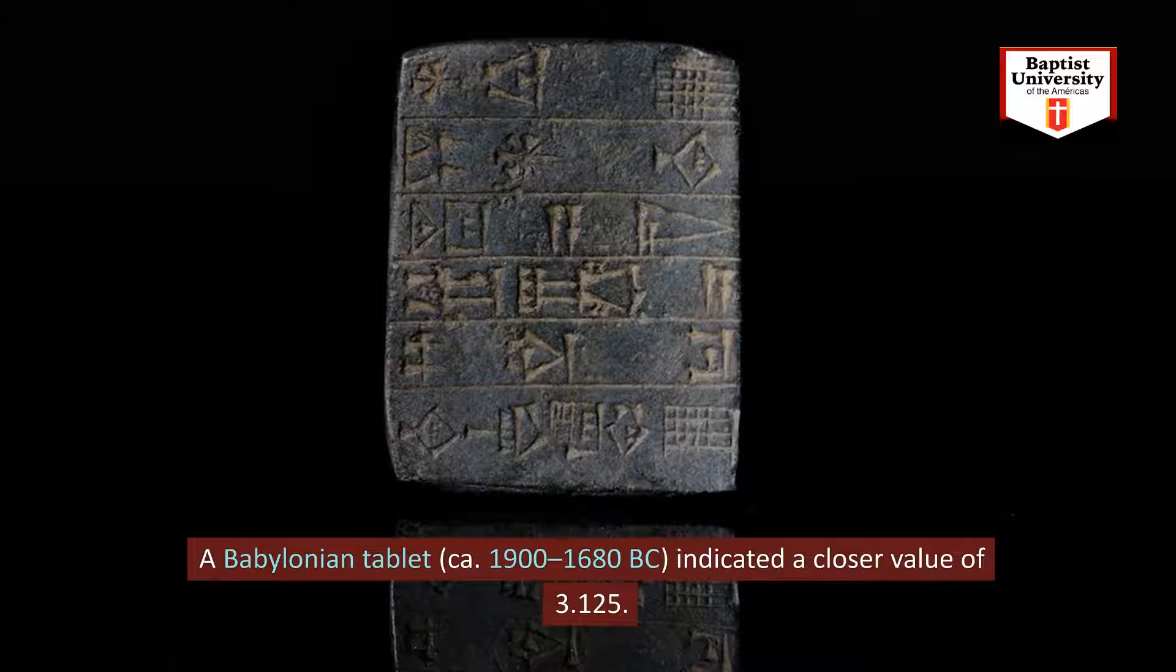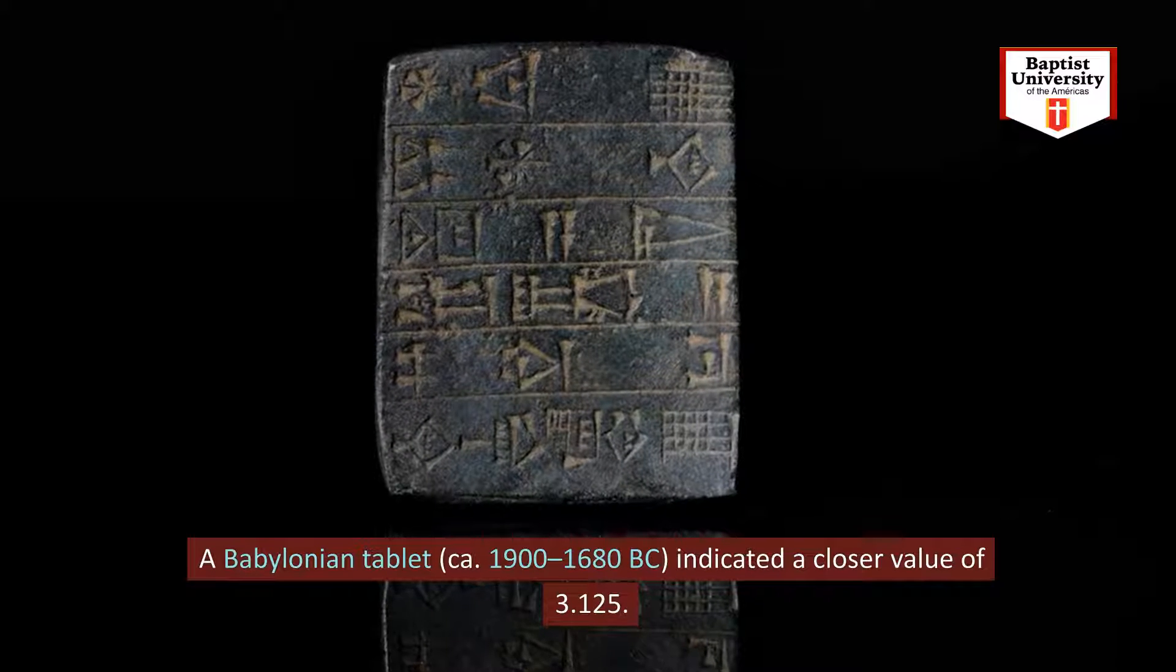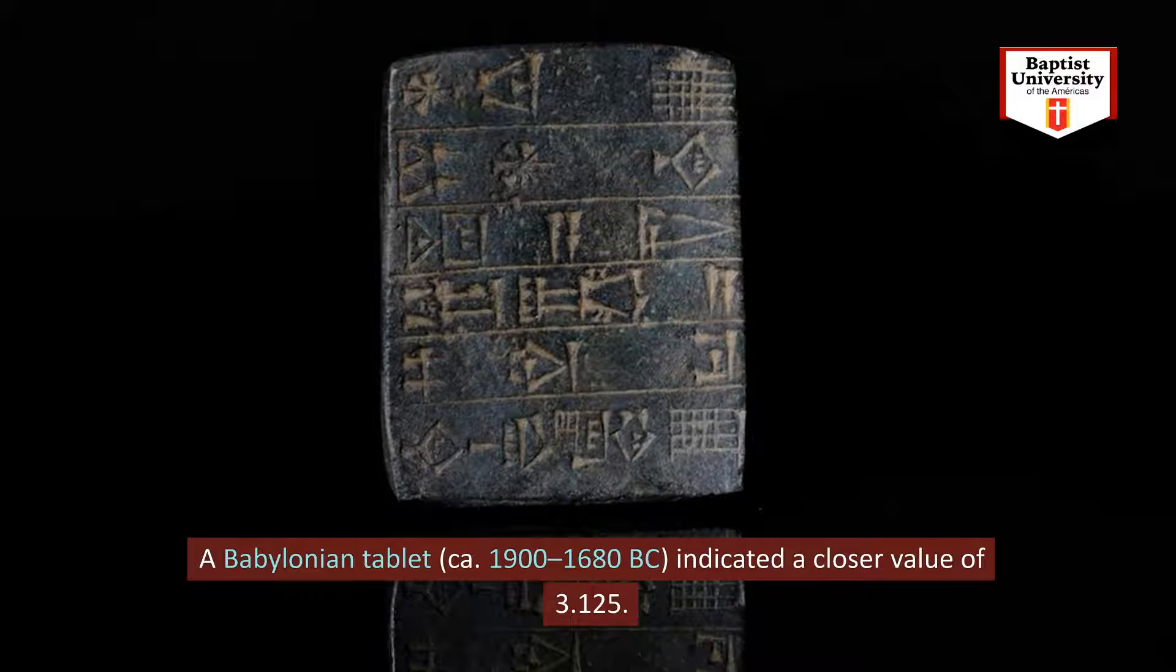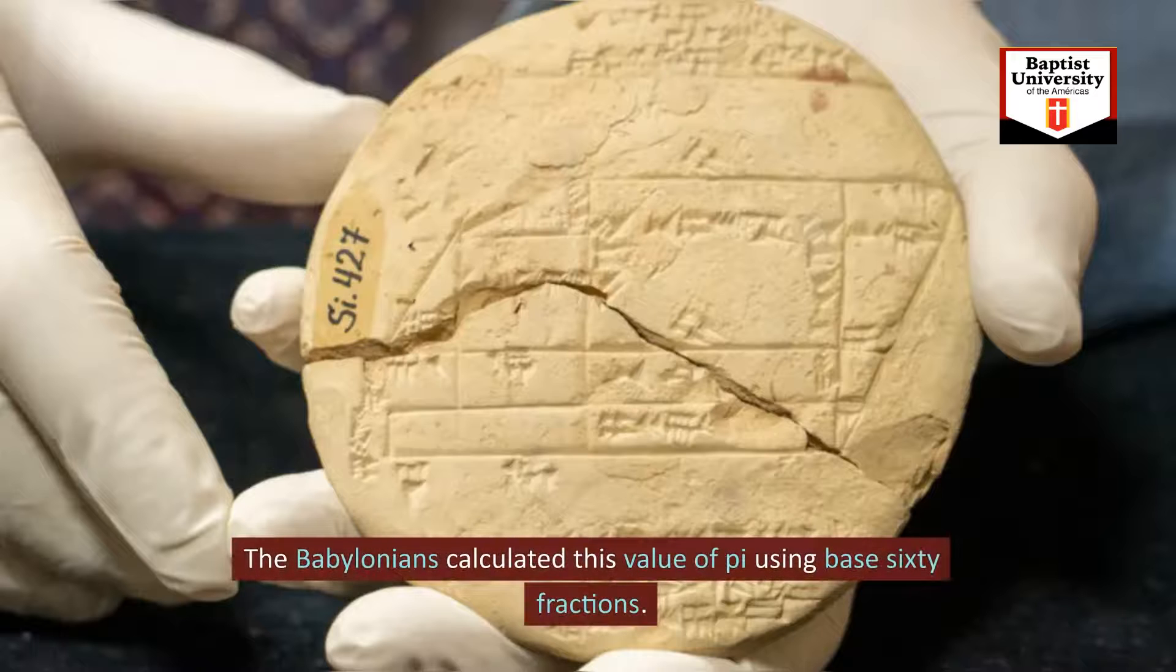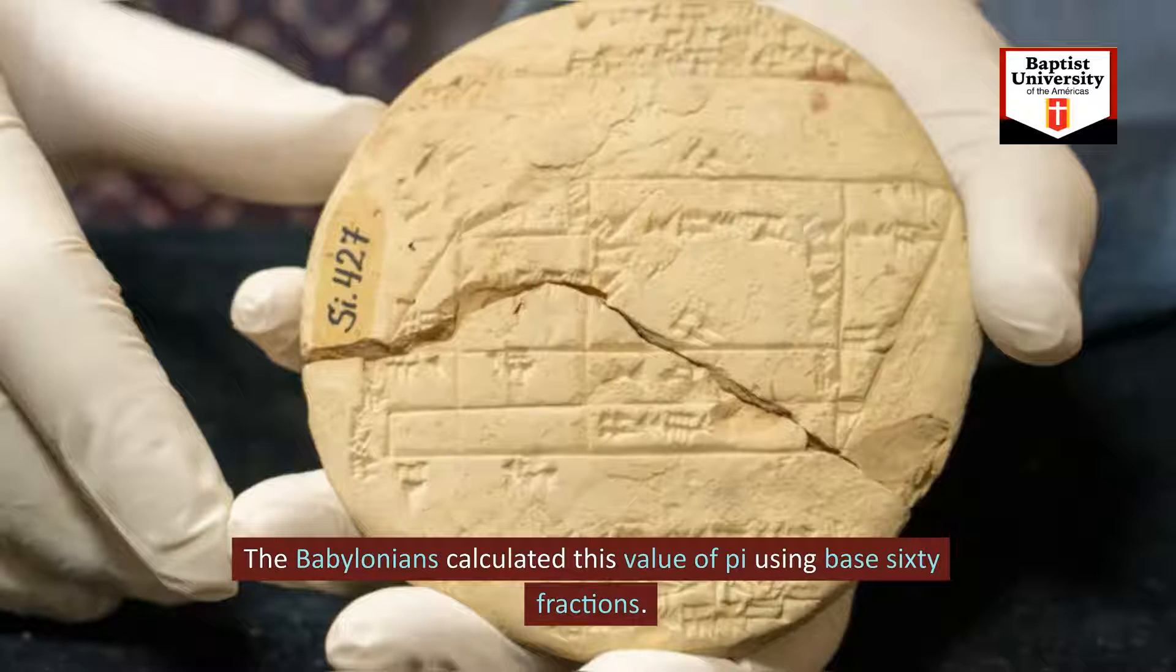A Babylonian tablet, circa 1680 BC, indicated a closer value of 3.25. The Babylonians calculated this value of pi using base 60 fractions.